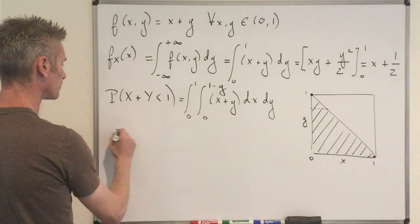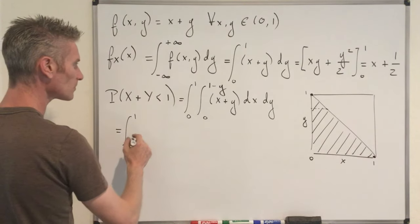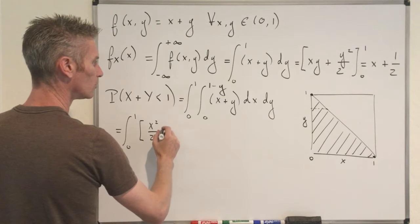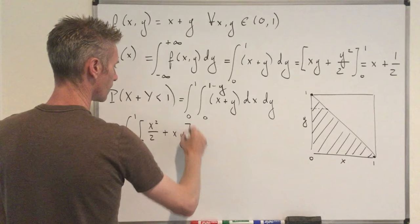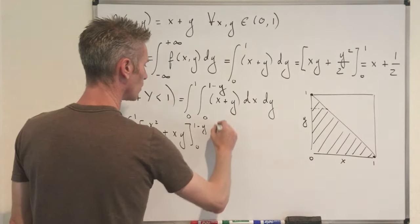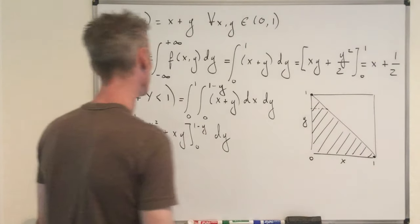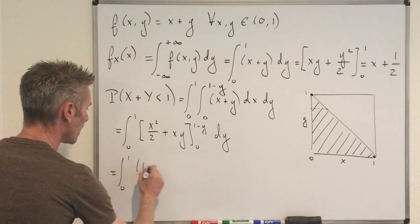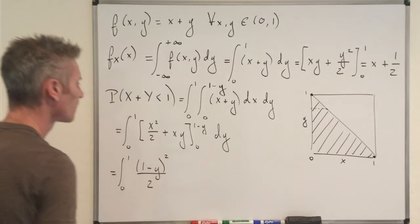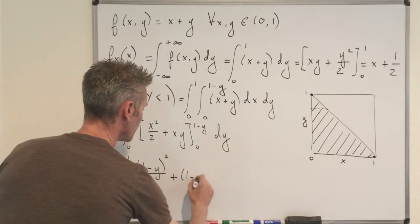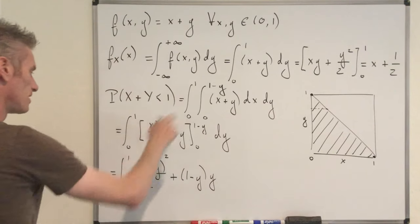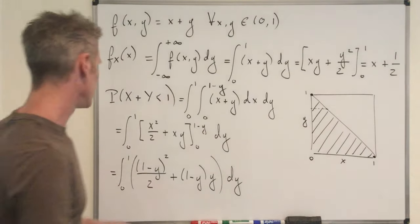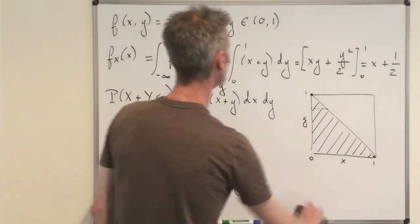Computing the inner integral gives [x²/2 + xy] evaluated from 0 to 1−y, which equals (1−y)²/2 + (1−y)·y. Expanding this expression: the constant term gives 1/2, the degree-1 terms cancel (−y from the first part and +y from the second), and the degree-2 terms give y²/2 − y² = −y²/2. So the integrand simplifies to 1/2 − y²/2.